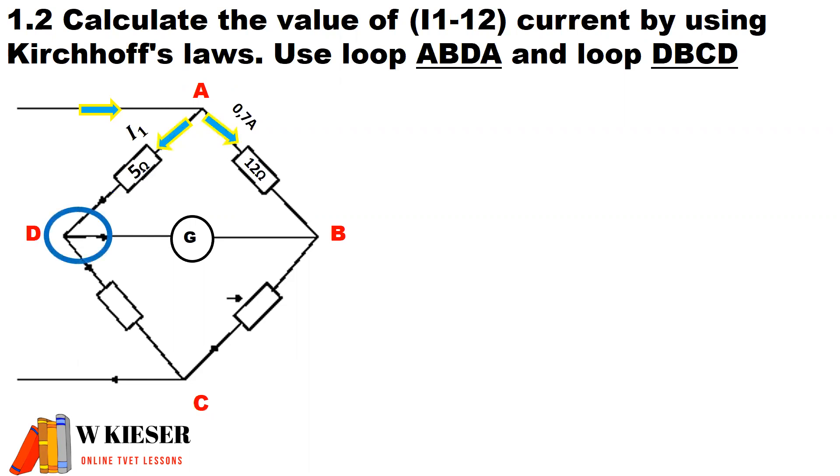Then we've got junction point B. And from there, current passes through the 5-ohm resistor, and that is I2. And once again, I2 is the unknown current that we have to calculate.